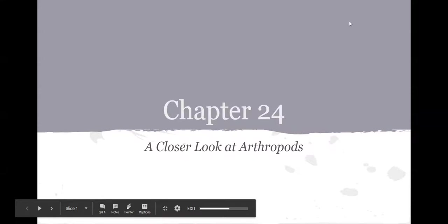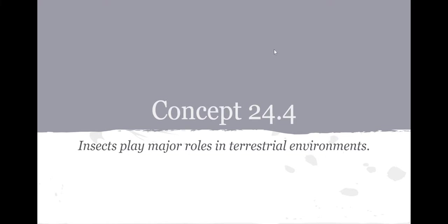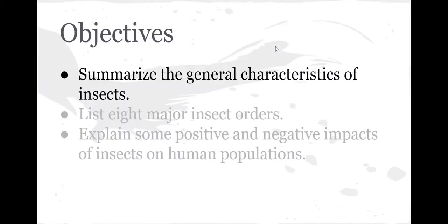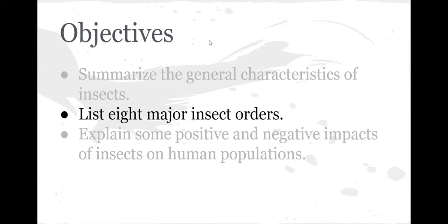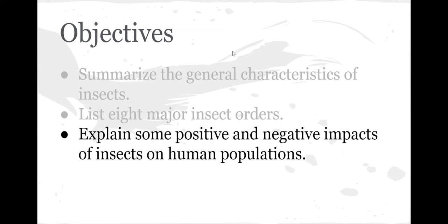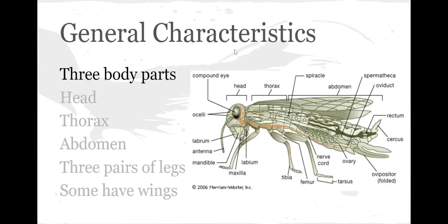All right, in this final section of Chapter 24, we're covering the biggest group: insects. Insects play major roles in terrestrial environments and are typically at the bottom of the food chain for many different food webs. We'll look at the characteristics of insects, go through eight major insect orders, and explain the positive and negative impacts insects have on human populations.